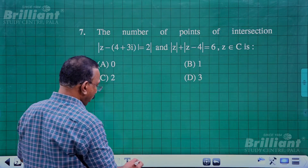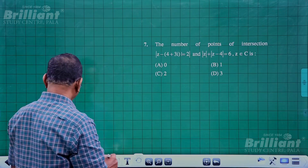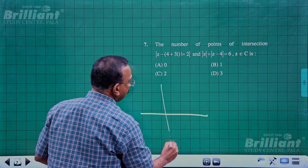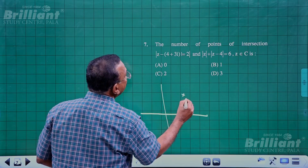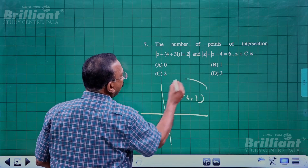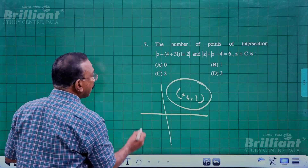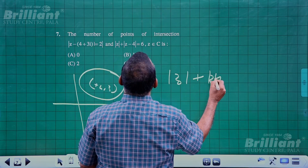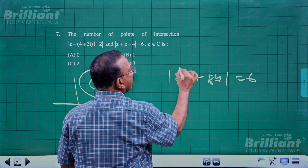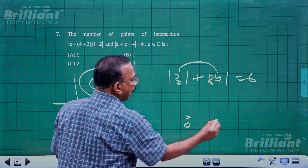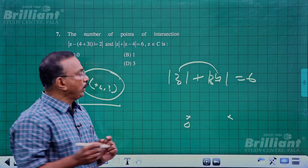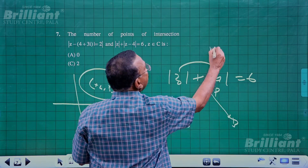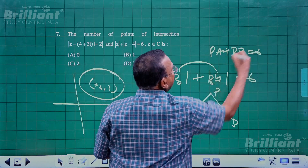Question 7: A circle has center 4i (i.e., center at (0,4)) and radius 3. The second condition is |z| + |z - 4| = 6. The distance between the two foci at 0 and 4 is 4 units. Since a point P satisfies PA + PB = 6, this is an ellipse with foci at (0,0) and (4,0), midpoint at (2,0).